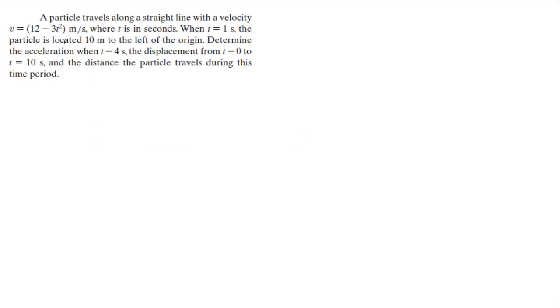A particle travels along a straight line with a velocity of 12 minus 3t squared in meters per second, where t is in seconds. When t equals 1 second, the particle is located 10 meters to the left of the origin. Determine the acceleration when t equals 4 seconds, the displacement from t equals 0 to t equals 10 seconds, and the distance the particle travels during this time period.